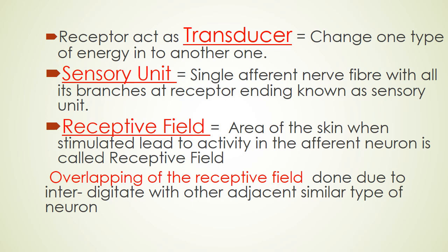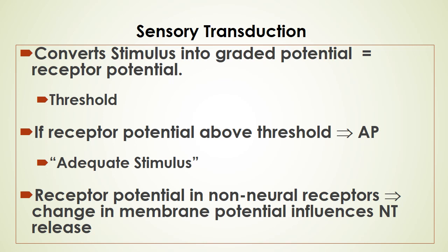Overlapping of receptive fields occurs due to interdigitation with adjacent similar-type neurons. When a stimulus reaches threshold level, an action potential develops. Before that, a receptor potential develops inside the receptor. In non-neural receptors, the receptor potential causes changes in membrane potential due to ionic channel changes, which influences neurotransmitter release.